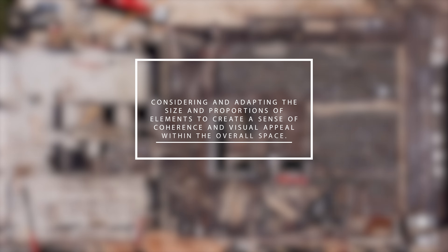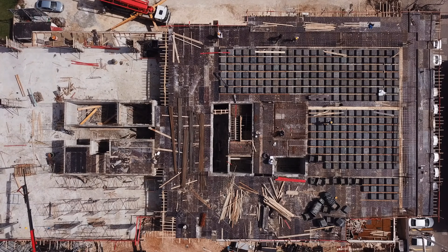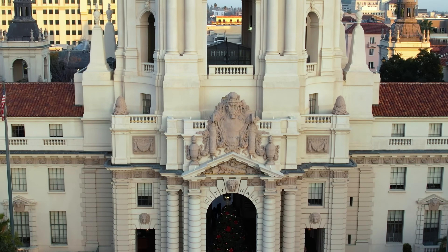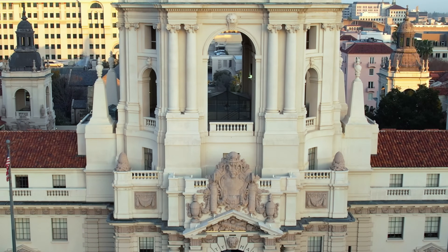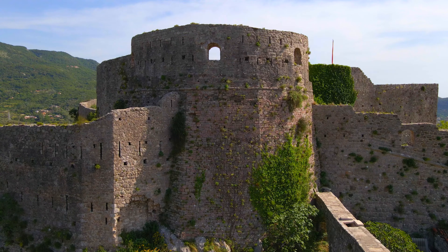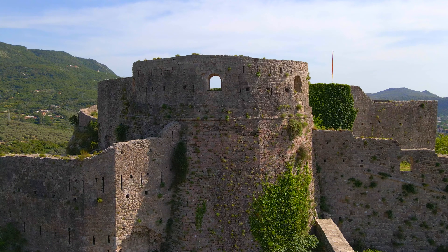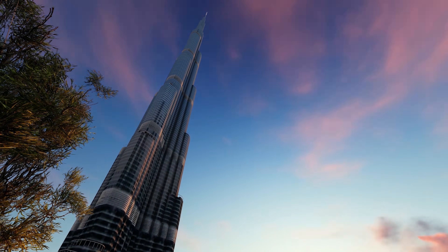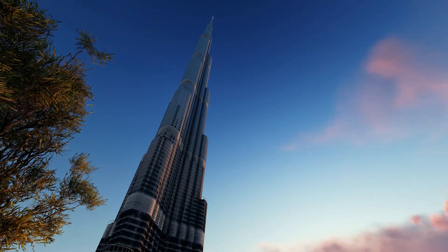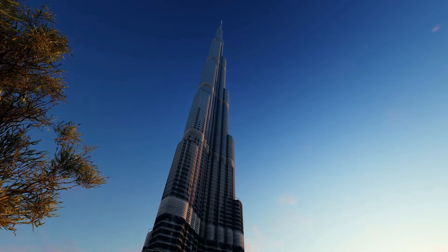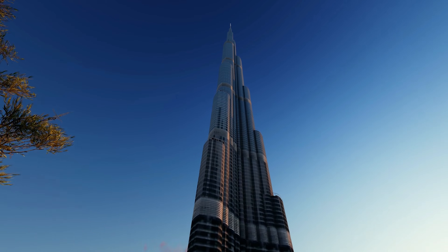Scale refers to the size of the building in relation to its surroundings. The scale of a building is crucial to creating a sense of place and ensuring that it fits seamlessly into its environment. The scale must be appropriate to the context and should take into account the surrounding buildings, landscapes, and natural features. One example of a building that applies this in its design is the Burj Khalifa, located in Dubai. The Burj Khalifa is currently the tallest building in the world, standing at 828 meters or 2,717 feet tall.